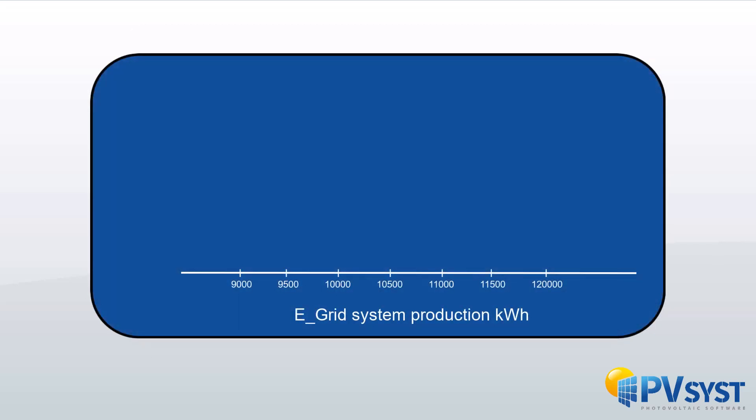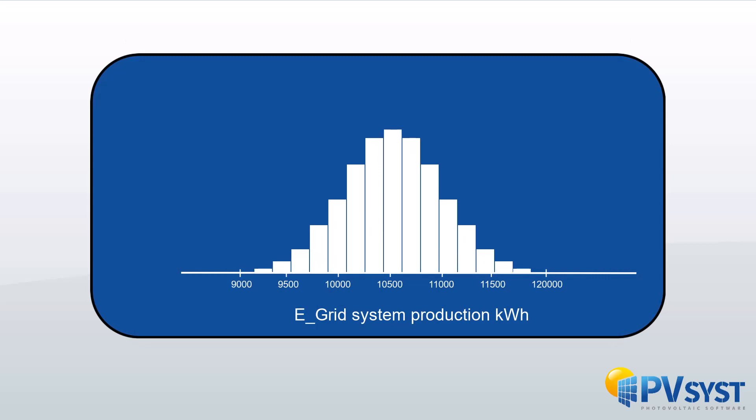This approach supposes that over several years of operation the distribution of the annual yield will follow a statistical law which is assumed to be the Gaussian or normal distribution.